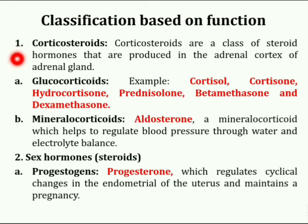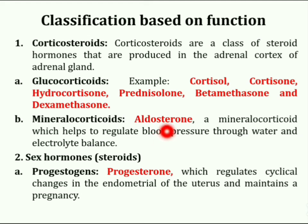Corticosteroids are a class of steroid hormones produced in the adrenal cortex of the adrenal gland. Glucocorticoids are a type of corticosteroid hormone that is very effective at reducing inflammation and suppressing the immune system. Cortisol is a natural glucocorticoid whose functions include immunosuppression. Other glucocorticoids include hydrocortisone, prednisolone, betamethasone, and dexamethasone. Aldosterone is a mineralocorticoid which helps regulate blood pressure through water and electrolyte balance.